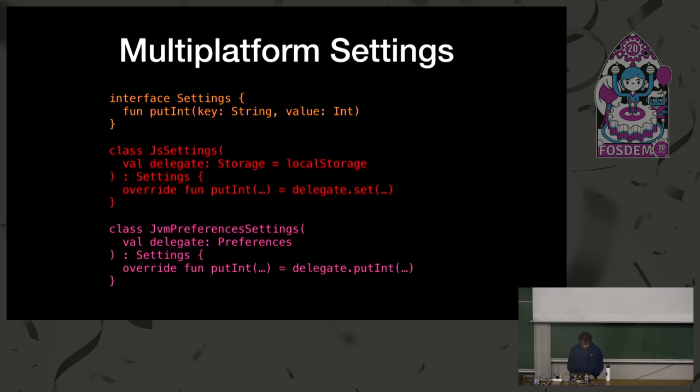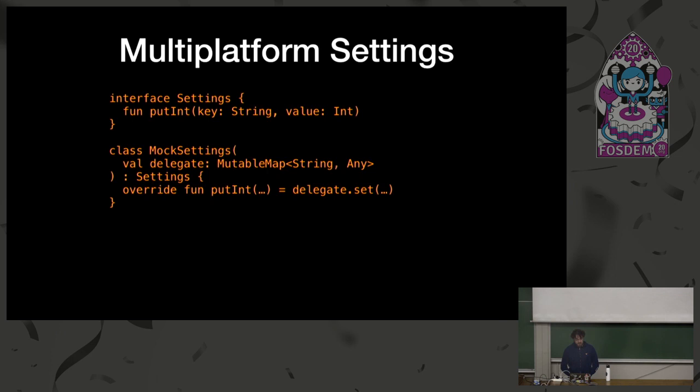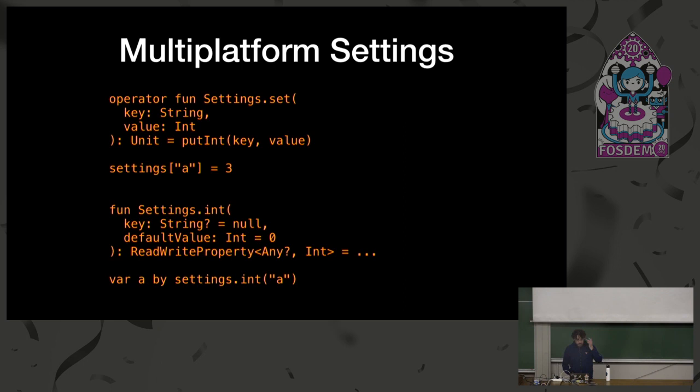I also include a MockSettings implementation. So if you're writing application code that interacts with this library and you want to write tests around it, you can use this mock settings implementation, which just has an in-memory map and you don't have to worry about serializing your actual data to disk in your tests. And then there are operators and delegates to add that nicer syntax.